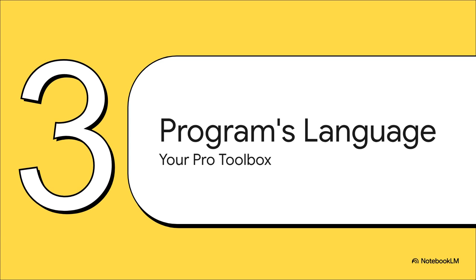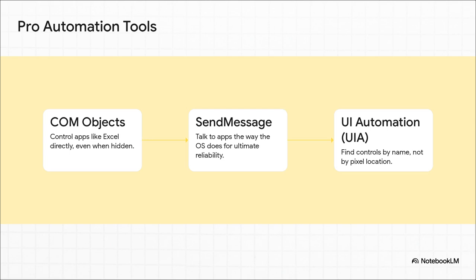So how do you actually speak a program's native language? AutoHotKey comes with an incredible toolbox for this, and it's way more accessible than you'd think. These three things are going to be your new best friends. First up, COM objects — they let you control programs like Excel or Word without them even being visible; you can be writing to a spreadsheet in the background. Second, SendMessage and PostMessage — this is how Windows itself talks to programs, and it's incredibly reliable. And third, UI Automation, or UIA — this lets your script find a button by its name, like 'save', and click it no matter where it is on the screen. No more pixel hunting.